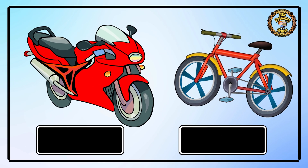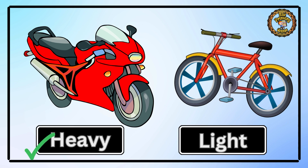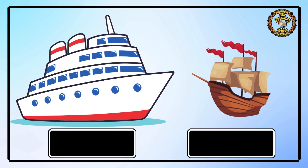We have a red shiny racing bike and a bicycle. Tell me which one is heavy? Yes, the racing bike is heavy and the bicycle is light in weight. Next, we have a cruise and a Zabek. Look carefully and tell me which one is heavy? Yes, the cruise is heavy and the Zabek is light.